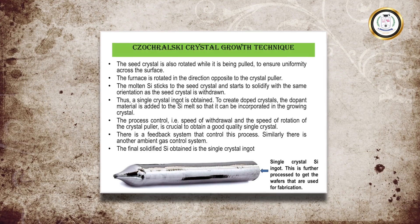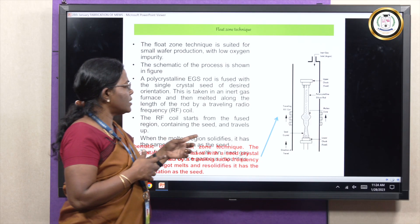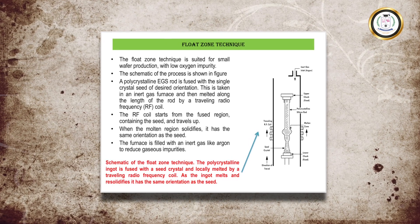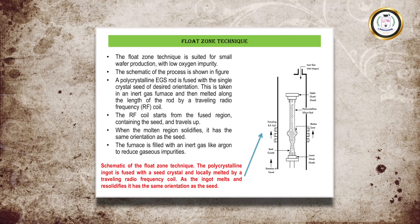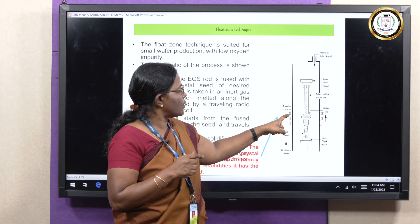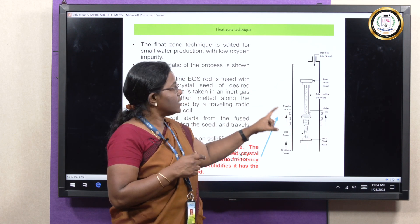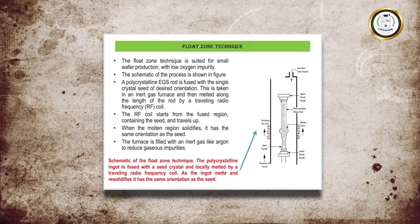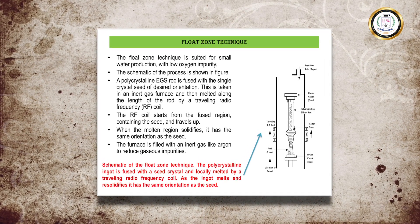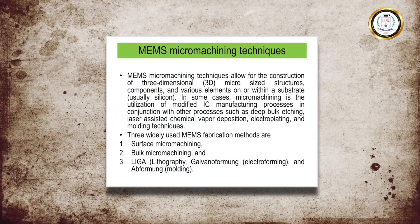In the float zone technique, the seed is fused with the metallurgical grade silicon and heated with a radio frequency coil. The furnace used is an inert gas furnace, and the type of gas used is argon, which is used to reduce impurity. These are the fabrication steps for the chip or wafer.